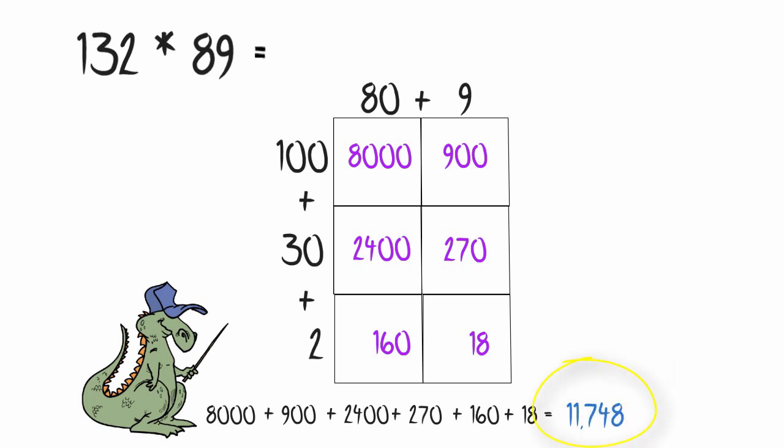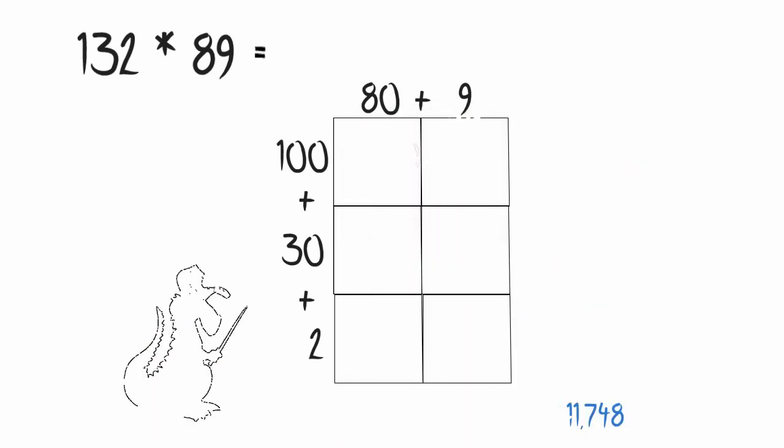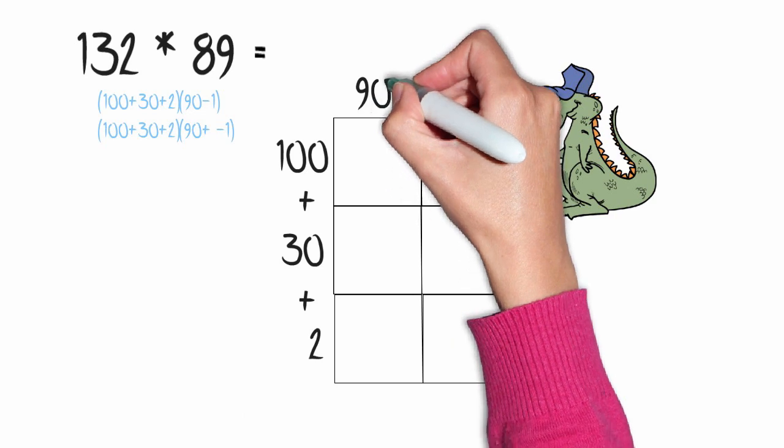I can also do this problem slightly differently. I'm going to start with the same problem, 132 times 89. I'm going to break up 132 the same way I did before. But this time, instead of writing 89 as 80 plus 9, I'm going to write it as 90 minus 1.